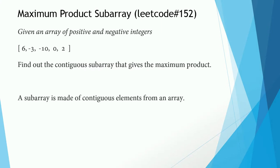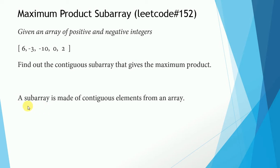You are given an array of both positive and negative integers. The job is to find out the contiguous subarray that gives us the maximum product as well as the maximum product value. Remember, you need to find a subarray, not a subsequence. A subarray is made of contiguous elements from the array.